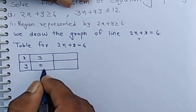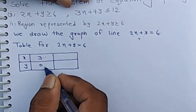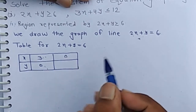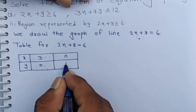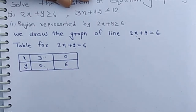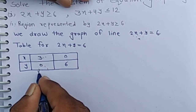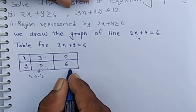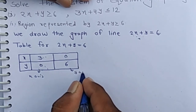The line cuts the x-axis at point 3 comma 0. At the y-axis, x equals 0 — putting x equals 0, we get the value of y is 6. So the line cuts the y-axis at 0 comma 6. That means 3 comma 0 is the point on the x-axis and 0 comma 6 is the point on the y-axis.